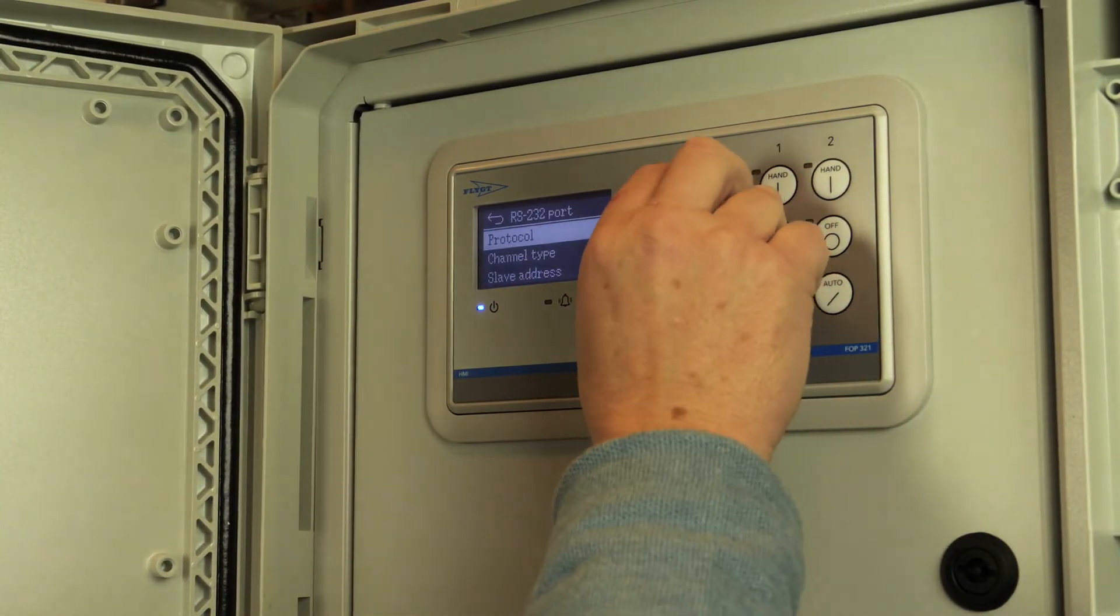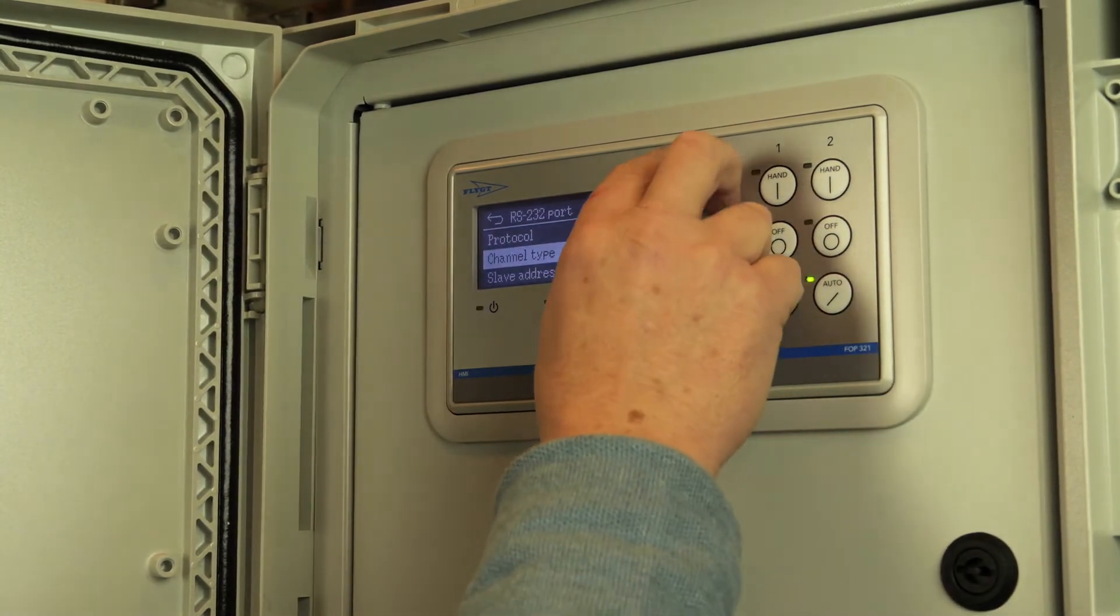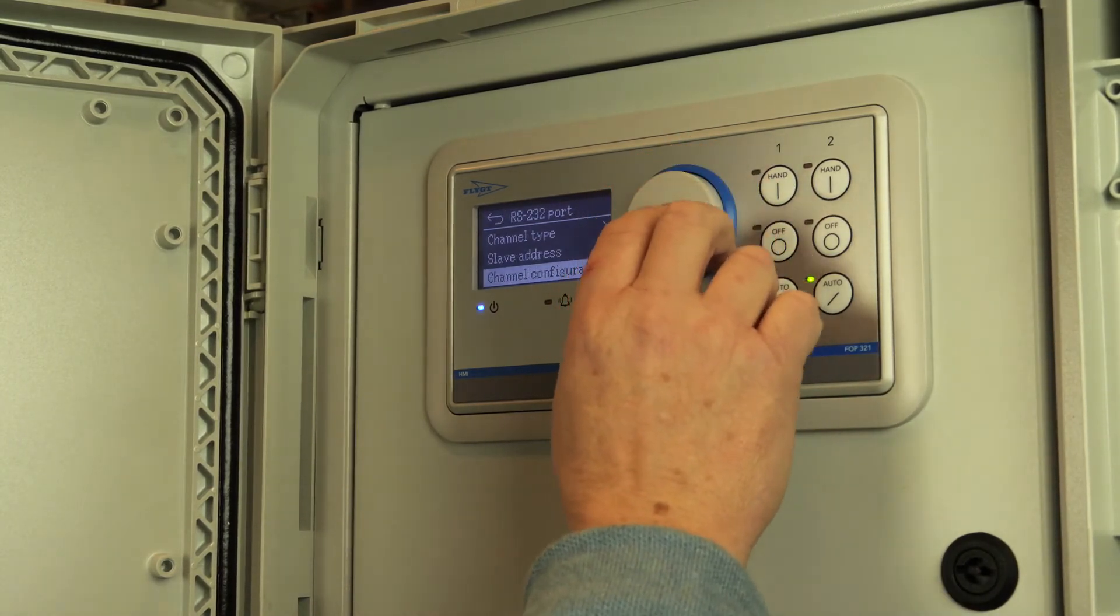Step back. Channel type: RS-232. Step back. Slave address: 001. Step back. And then go down one. Channel configuration.